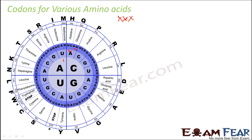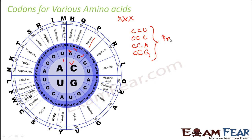For example, let us consider a codon starting with C. If the first letter is C and the second letter is also C, then the third letter can be U, C, A, or G — giving codons CCU, CCC, CCA, and CCG. Looking at the chart, all of these combinations code for proline. So proline is an amino acid coded by four different codons: CCU, CCC, CCA, and CCG.